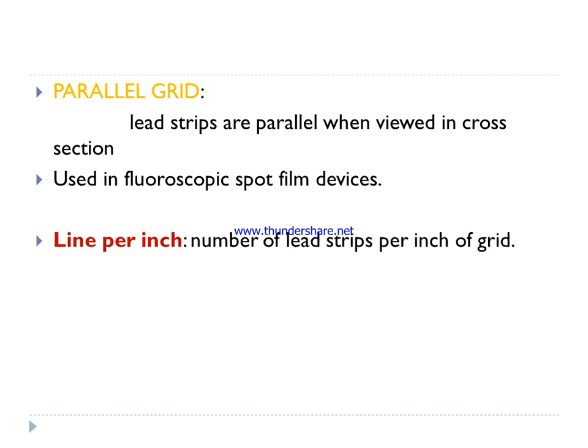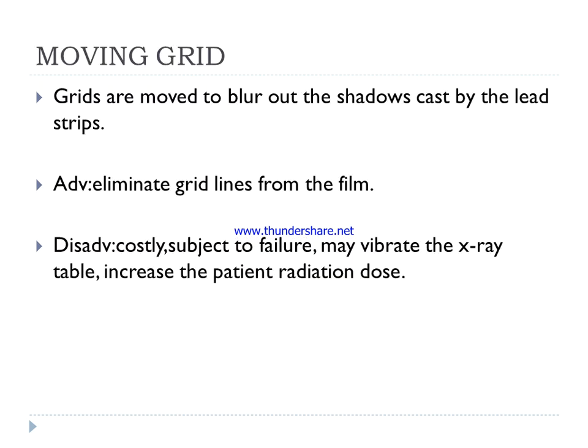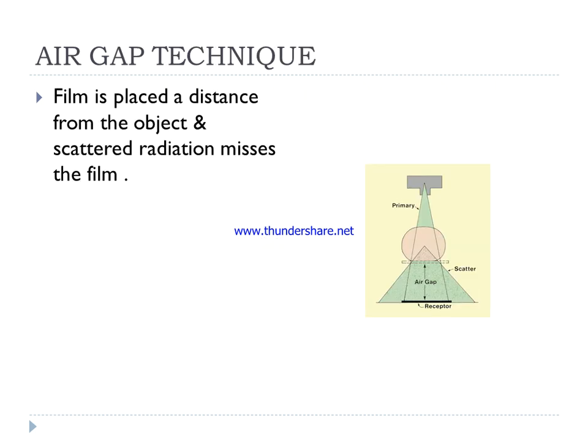A moving grid is mainly used to blur out the shadow cast by the lead strips. The main advantage is to eliminate grid lines from the film. However, moving grids are very costly, subject to failure, may vibrate the x-ray table, and increase the patient radiation load.